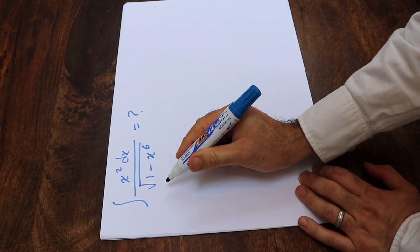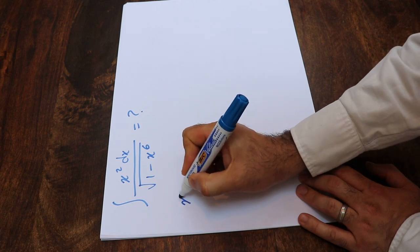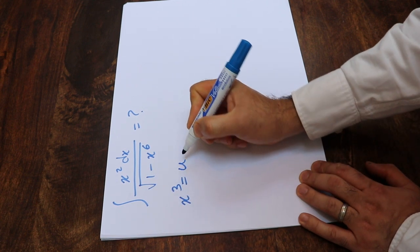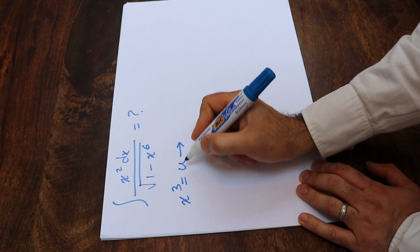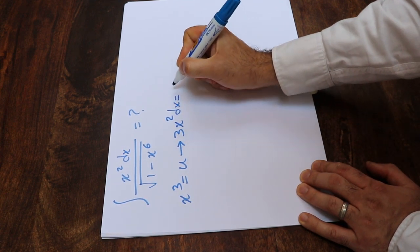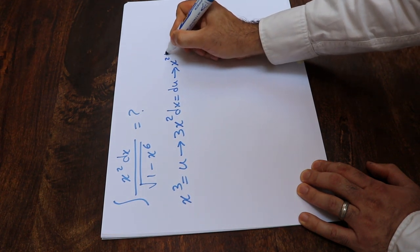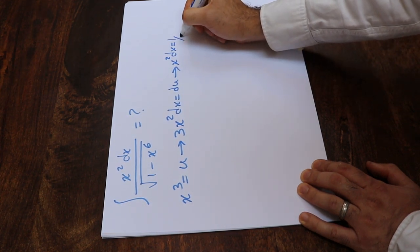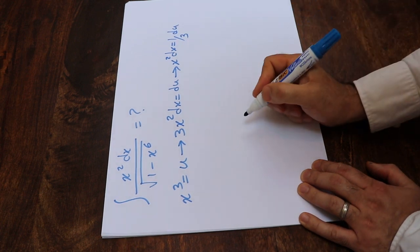You can solve this integral using the substitution rule. If you define x³ as u, and take the derivative from each side of this equation, that will be 3x² dx equals du. In other words, x² dx will equal 1 divided by 3 times du.